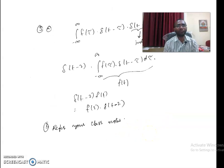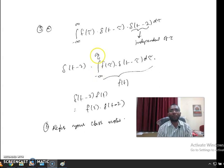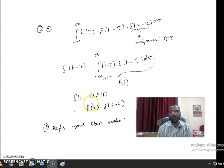The next question also has two parts. The first asks to evaluate ∫₋∞^∞ f(τ)δ(t-τ)δ(t-2)dτ. Since δ(t-2) is independent of τ, it factors out. The remaining integral ∫₋∞^∞ f(τ)δ(t-τ)dτ is the convolution of f(t) with δ(t), which equals f(t). So the result is f(t)·δ(t-2), and by the shifting property this equals f(2)·δ(t-2).